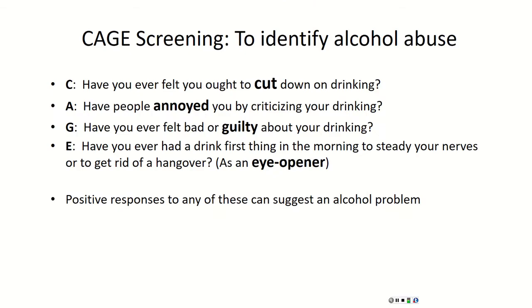The CAGE system is very useful for identifying alcohol abuse. CAGE stands for: C — Have you ever felt you ought to Cut down on your drinking? A — Have people Annoyed you by criticizing your drinking? G — Have you ever felt bad or Guilty about your drinking? E — Have you ever had a drink first thing in the morning to steady your nerves or get rid of a hangover — an Eye opener? Positive responses to any of these suggest it may be time to talk to a physician or counselor.